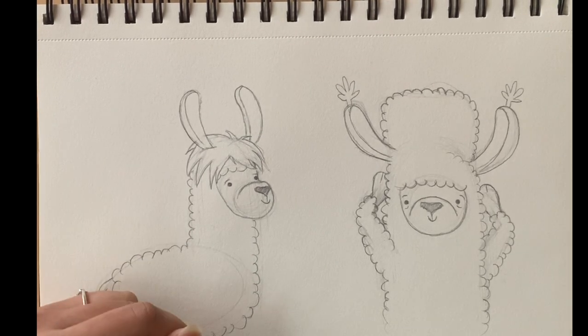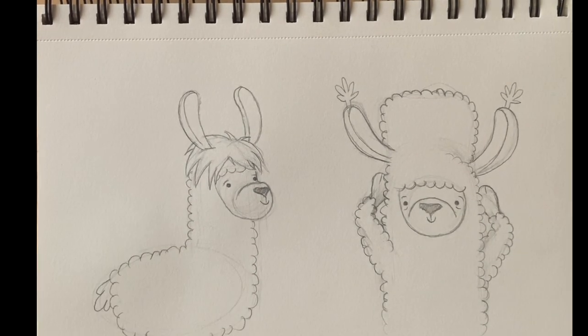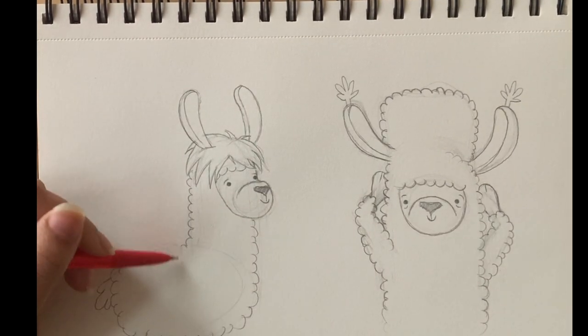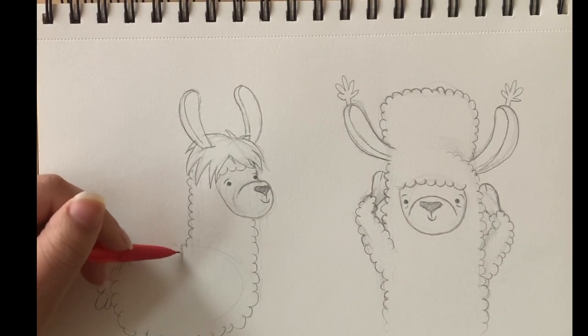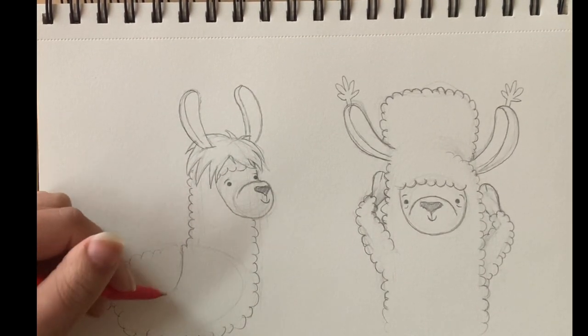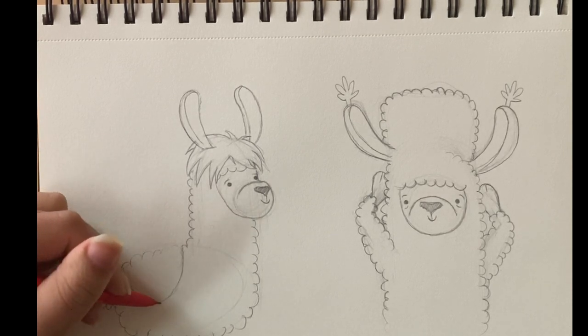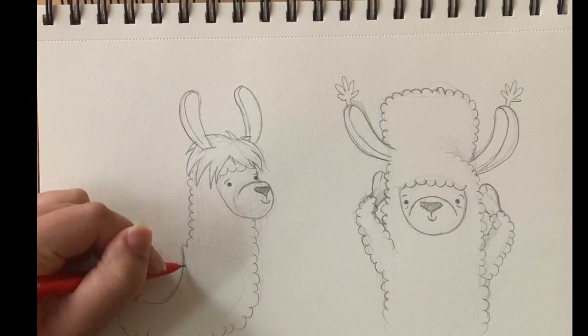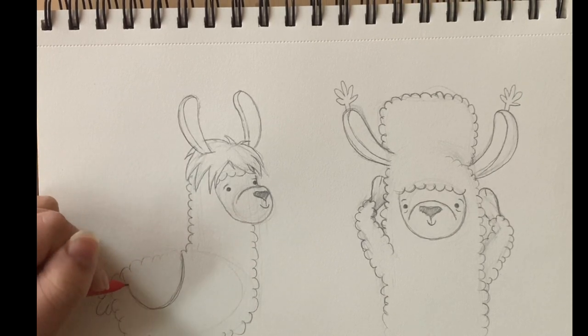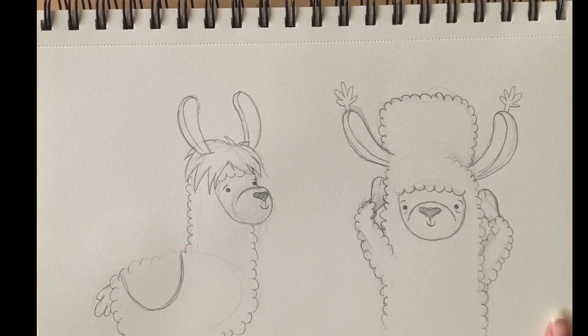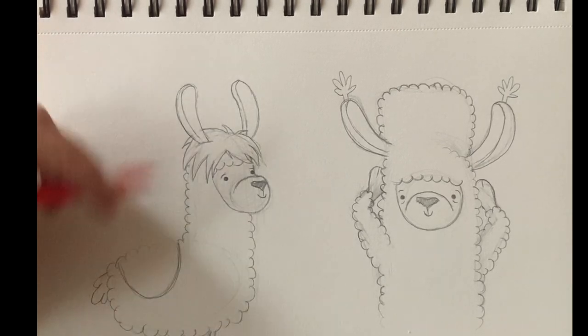Now I'm drawing out his little feet, all four of his little feet. Right here I decided that I wanted to give him a little cloth on his back, so I'm right now drawing that half circle so that I can draw the cloth on his back, and I'm connecting that to the other side.